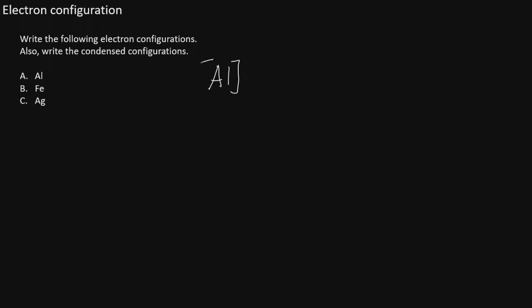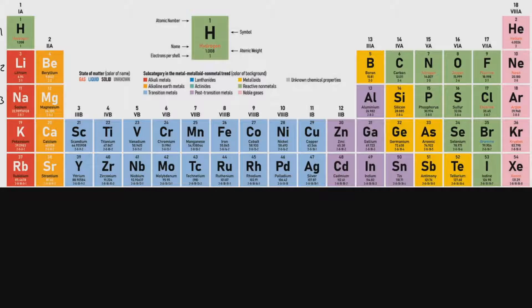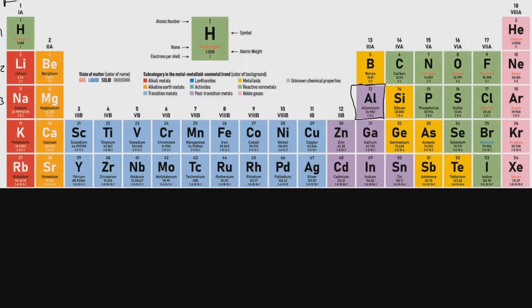To write the configuration, we'll go to the periodic table and locate aluminum, which is on level 3. We'll list all of the levels and sub-shells we have to travel through in order to reach aluminum. We begin in the upper left corner on level 1. The two-element-wide block on the left is the S block. Level 1 only has S electrons, and the other box for level 1 is on the right side, but is still considered part of the S block on level 1. So we write 1S2.